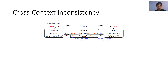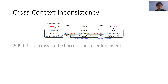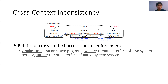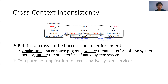This figure abstracts the interaction between Android applications and system services, as well as the interaction between Java and native system services. It also shows entities of cross-context access control enforcement, including an Android application, a deputy — the remote interface of a Java system service — and a target — the remote interface of a native system service.